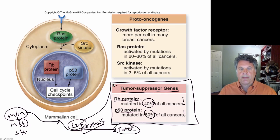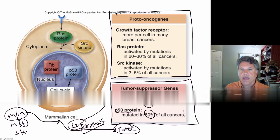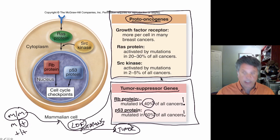We will pick up here next time with another class of proteins that can be mutated to cause cancer — the proto-oncogenes. We're considering two classes of genes that can be mutated to cause cancer, and we'll see the difference between proto-oncogenes and tumor suppressor genes in the next part of this lecture.